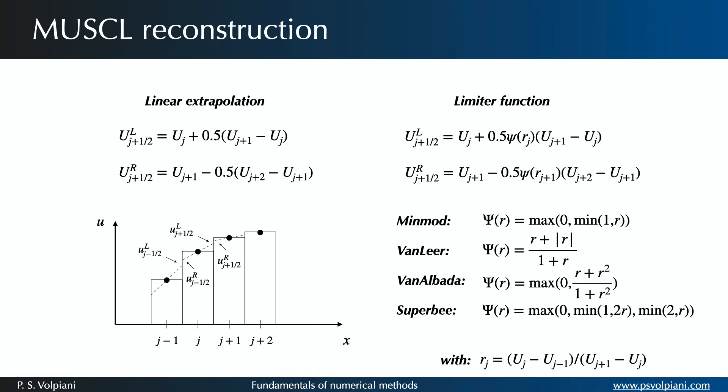The linear MUSCL reconstruction can be expressed in this form. Here I show several limiter functions: the MinMod, VanLeer, VanAlbada and SuperBee. The most robust limiter, but also the most dissipative one, is the MinMod. The SuperBee version captures stiff shock fronts, but it is less robust.